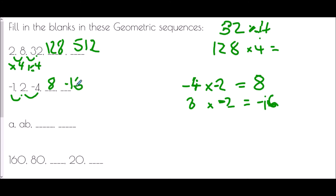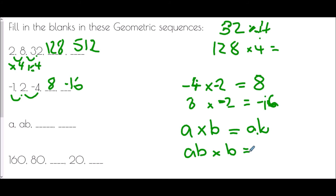In the next algebraic example, we have a and then ab. To turn a into ab, we must have multiplied by b. Continuing: ab times b is ab². Then ab² times b is ab³.